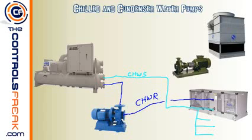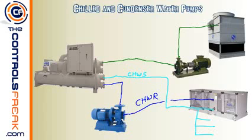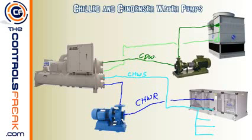On the condenser water side, hot water comes out of the chiller, goes through the pump, and enters the top of the cooling tower. It gets cooled down with the fan running, flows into the basin, and gets sucked back out to return to the chiller. These are labeled condenser water return — from the chiller to the tower — and condenser water supply — from the tower back to the chiller.